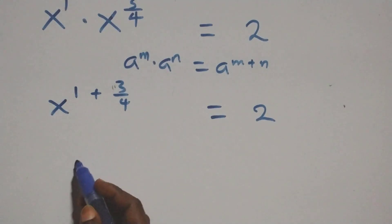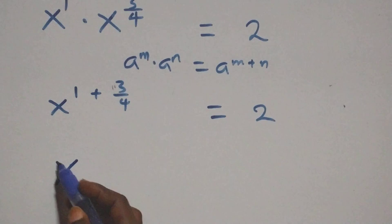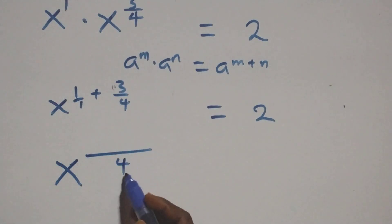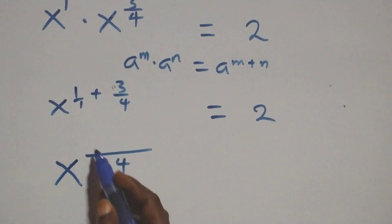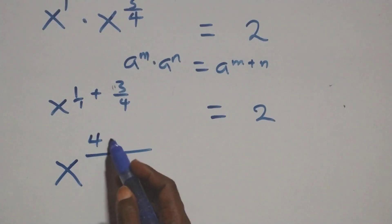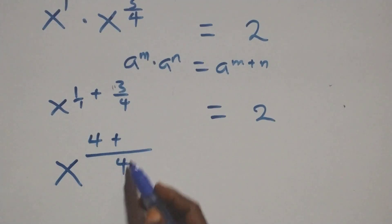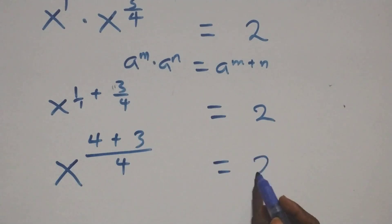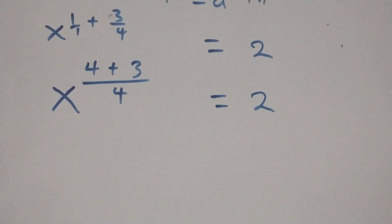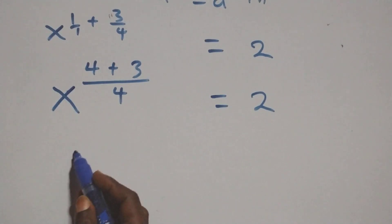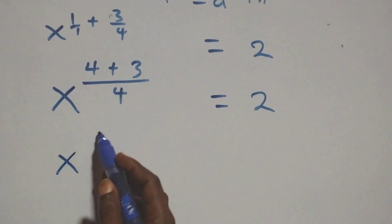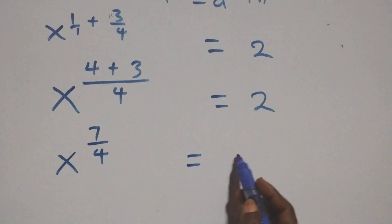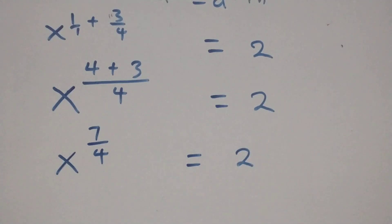We bring this power together. We have x raised to power: 1 over 1 with denominator 4, so 4 times 1 is 4, plus 1 times 3 is 3, equals to 2. That gives x raised to power 4 plus 3, that's 7, over 4 equals to 2.